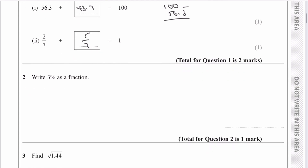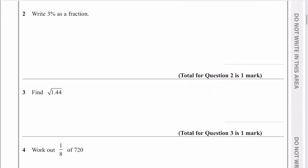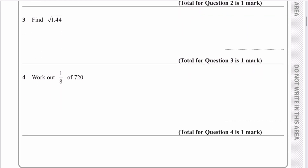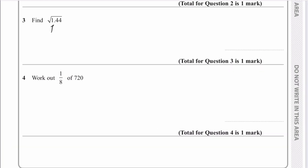Question two: write 3% as a fraction. Well, 3% basically means 3 out of 100, so I can write that as 3 over 100, and that's exactly fine for this question. Question three: the square root of 1.44 — just be very careful here — is going to be 1.2, and you can get that information directly from your calculator.